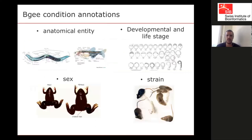As Mark said this morning, each and every sample in BG we annotate to an anatomical entity, developmental and life stage, sex, and strain. When we say we know the conditions where a gene is expressed, it will be that: where the gene is expressed regarding the organs, developmental stage, sex, and strains.